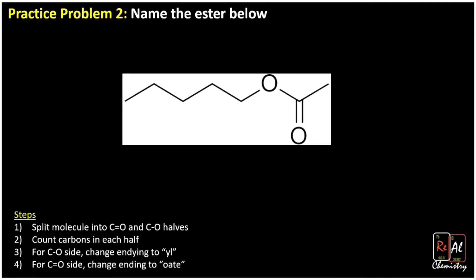So once again, we have our special bond right here, the carbon single bond, the carbon-oxygen single bond. So we're going to draw a box on this left-hand side, and we'll draw a box on this right-hand side. Now we'll count the carbons.